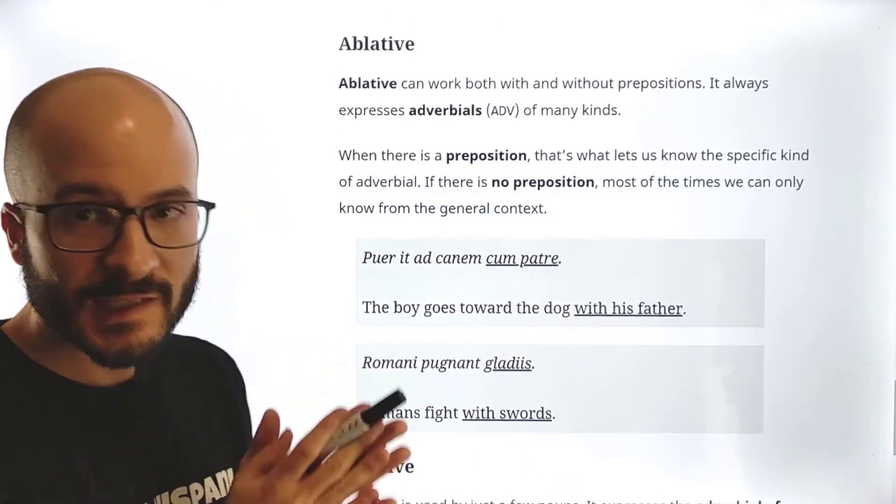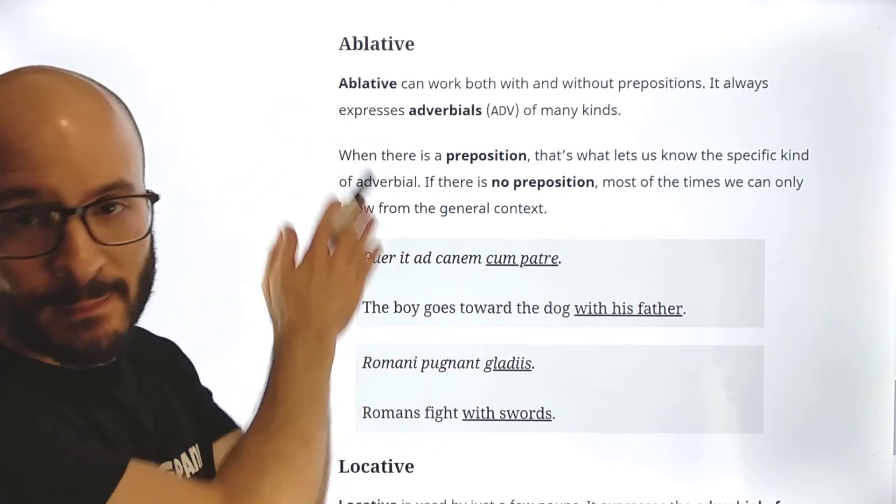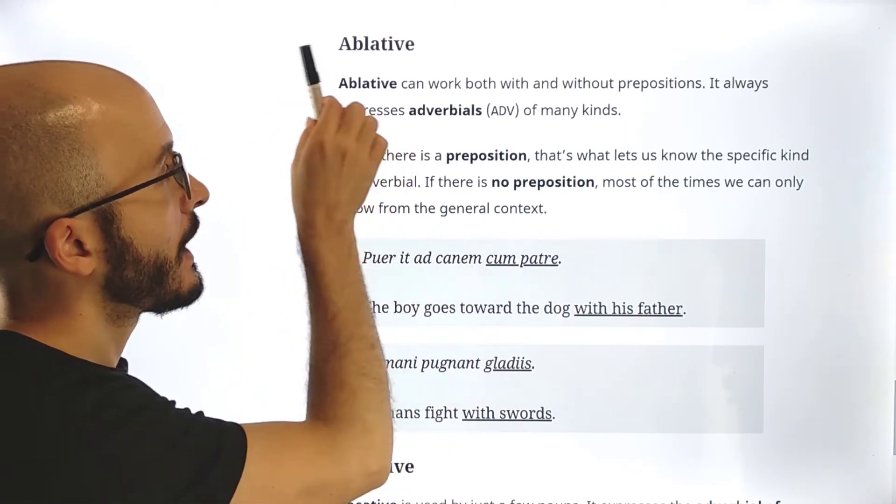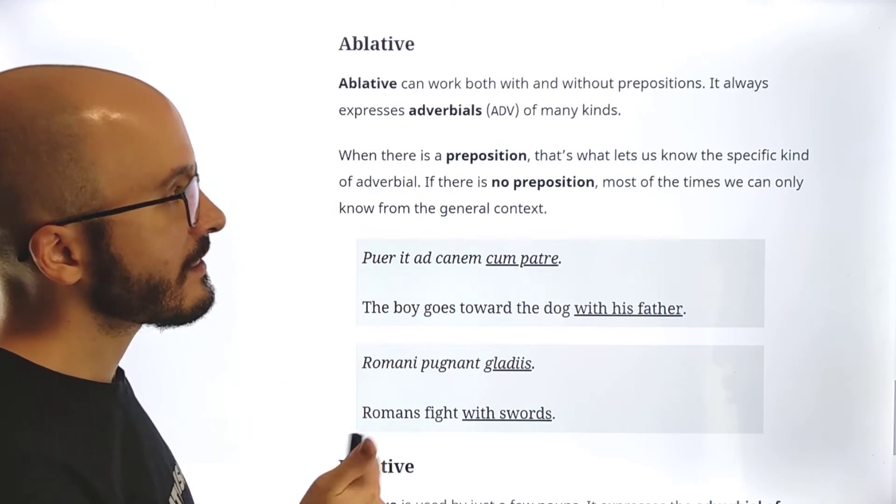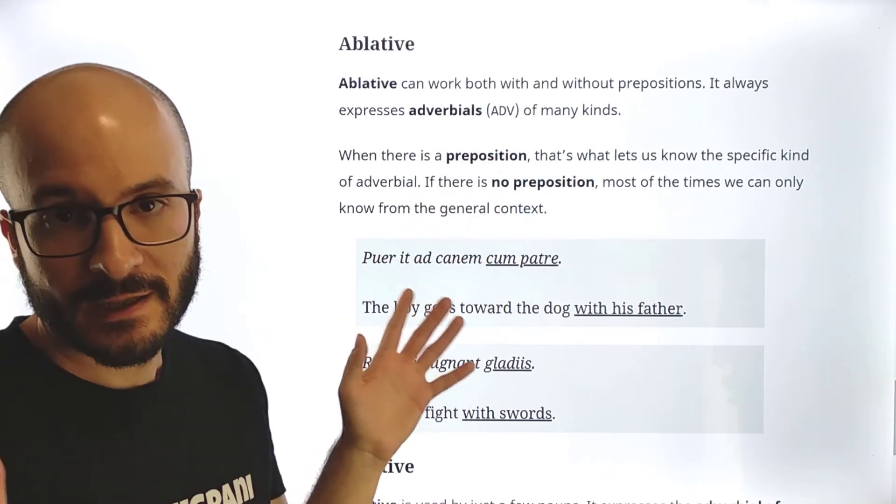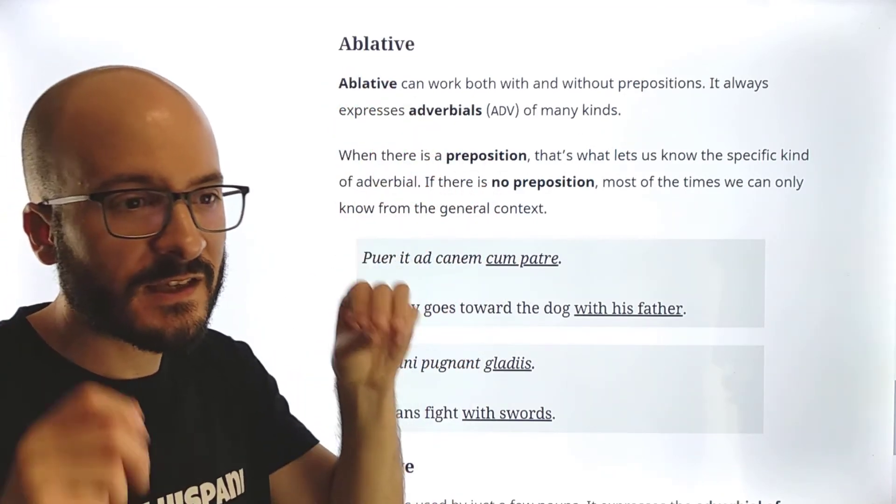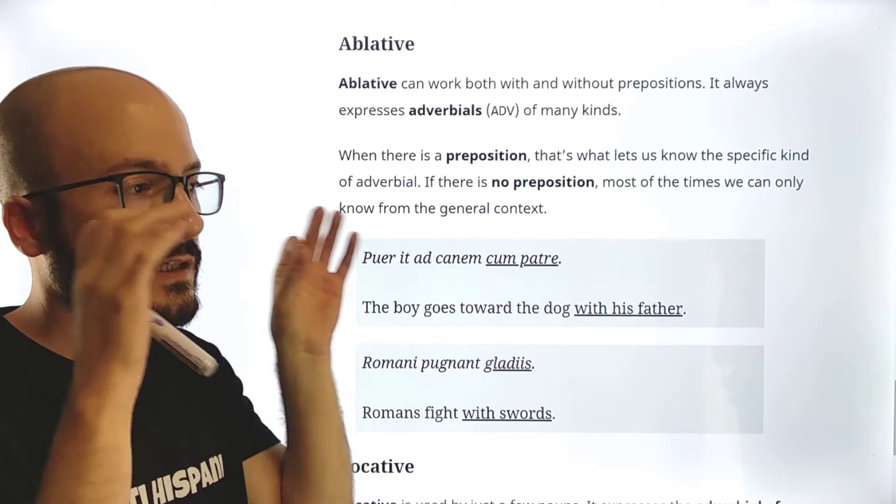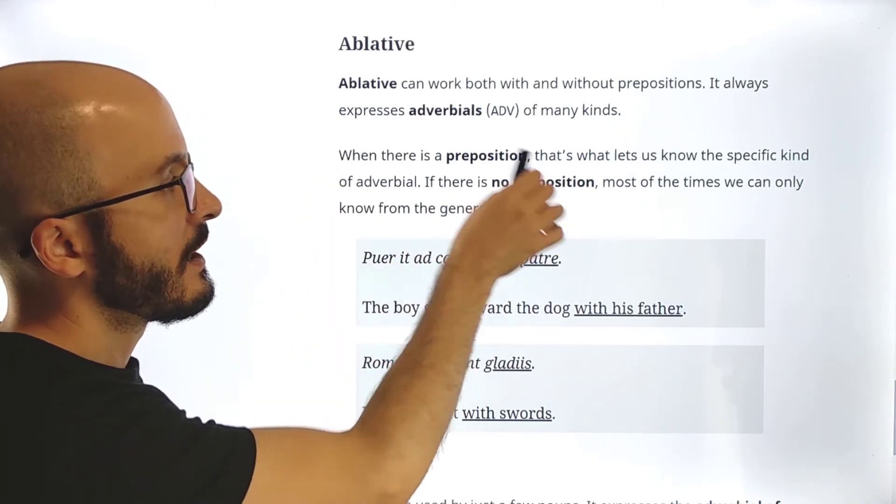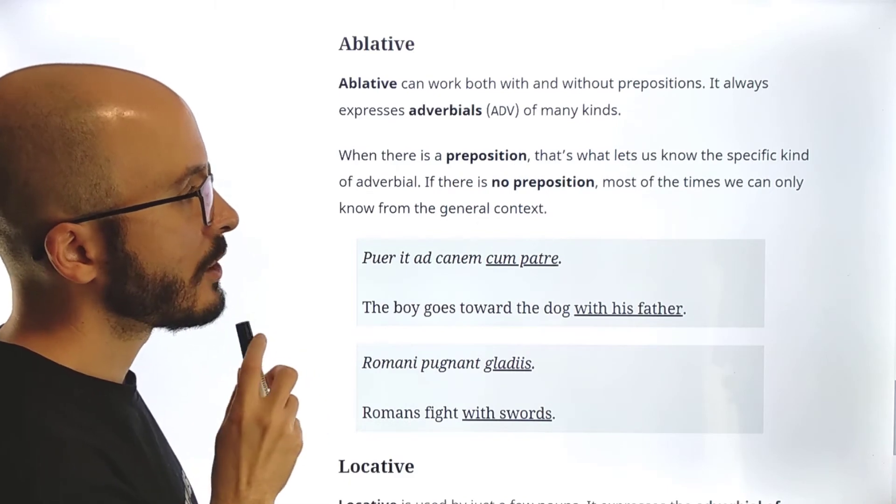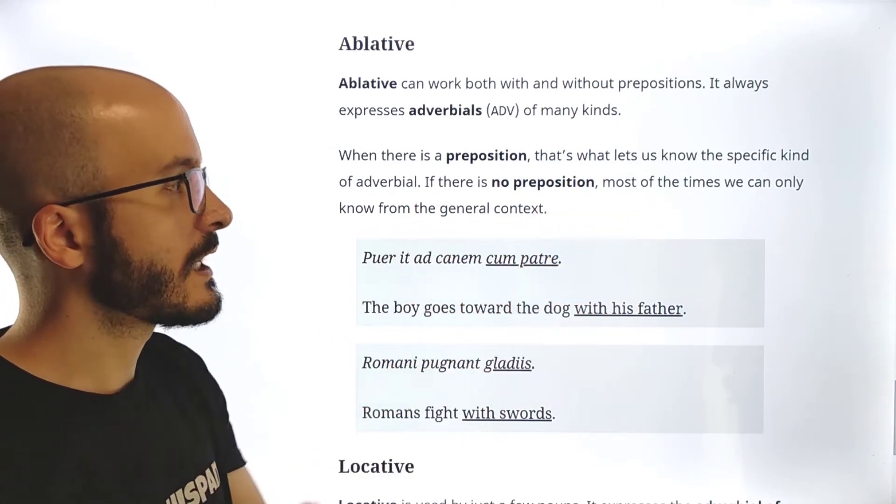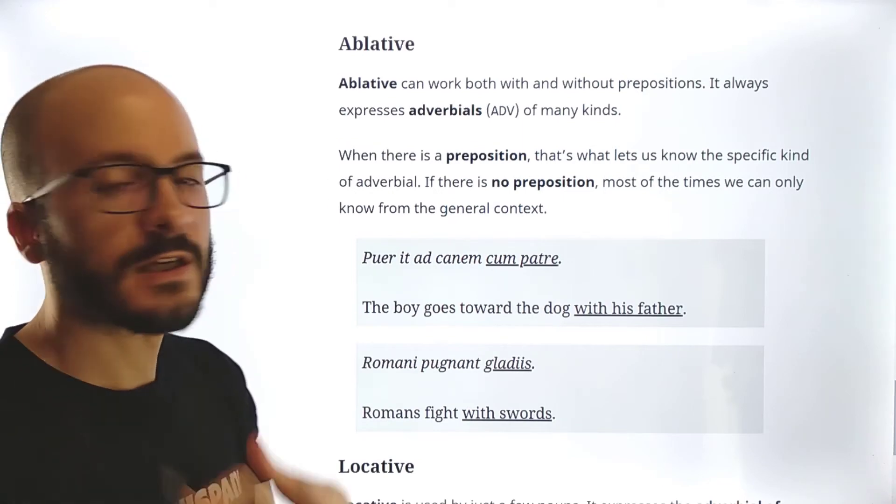Then the last important case is the ablative, which is also quite frequent. Ablative can work both with and without prepositions. It always expresses adverbials of many kinds. So the ablative is the case which is specialized in adverbials. When there is a preposition, that's what lets us know the specific kind of adverbial. If there is no preposition, most of the times we can only know from the general context.